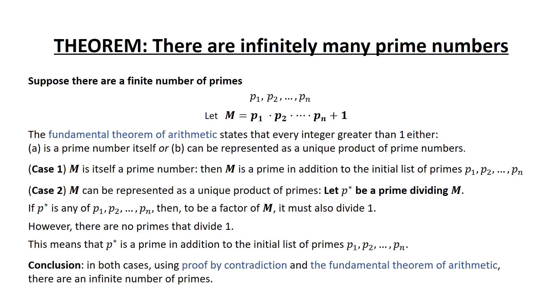So in both cases, using proof by contradiction and the fundamental theorem of arithmetic, there are not a finite number of primes, therefore there are an infinite number of primes. And that's that. We hope you enjoyed this week's math memo.